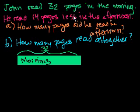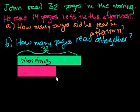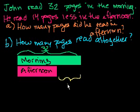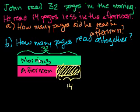He read 14 pages less in the afternoon. So the afternoon bar is going to be shorter. We don't know the exact number yet, but we'll figure it out. This is the afternoon bar. The difference between the morning bar and the afternoon bar is 14 — the morning was 14 more. So we can say: the number of pages in the morning minus 14 equals the number of pages he read in the afternoon.